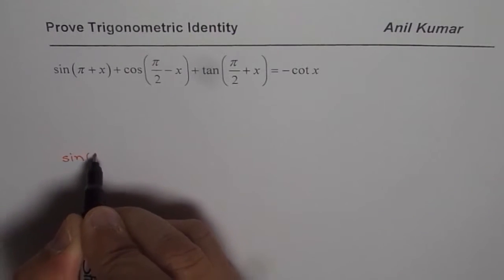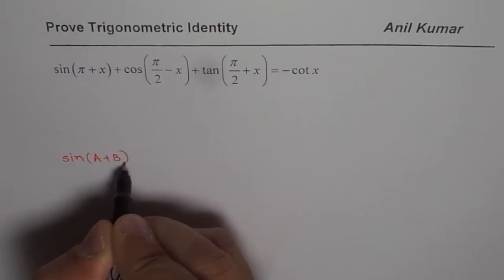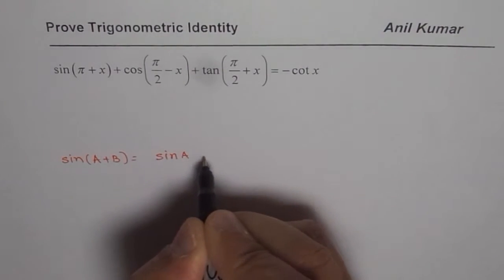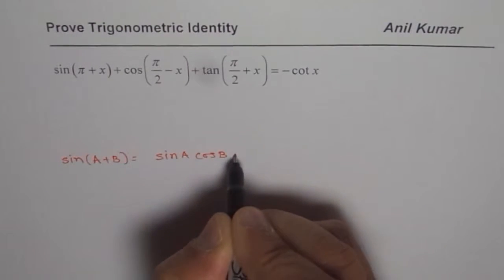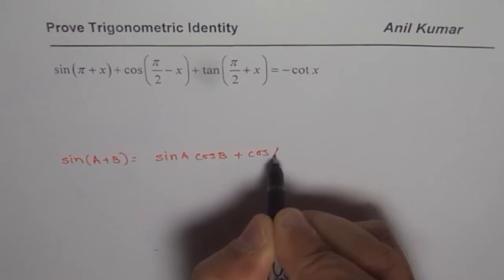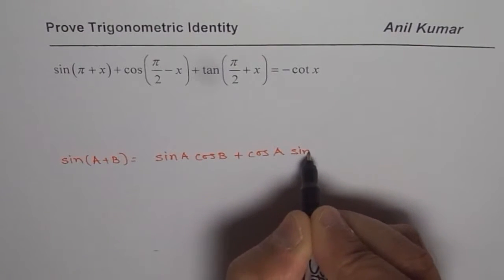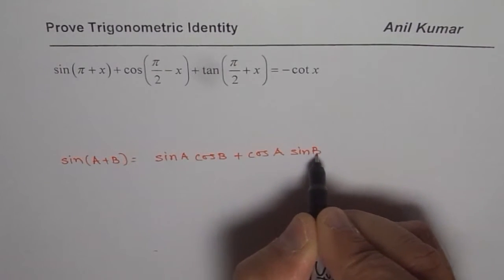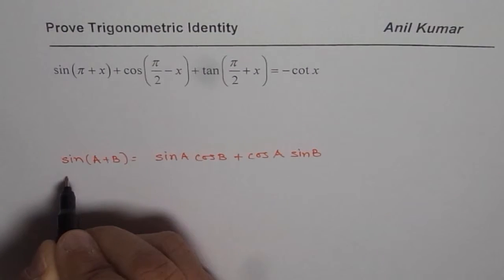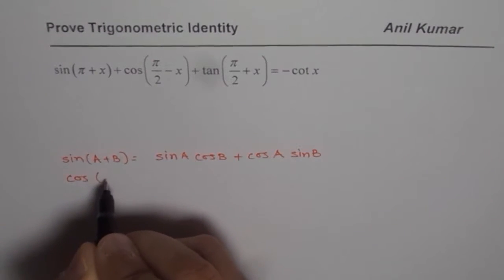It is sine of a plus b. You could apply that, which is sine a cos b plus cos a sine b. Where a is pi for you and b is x for you.